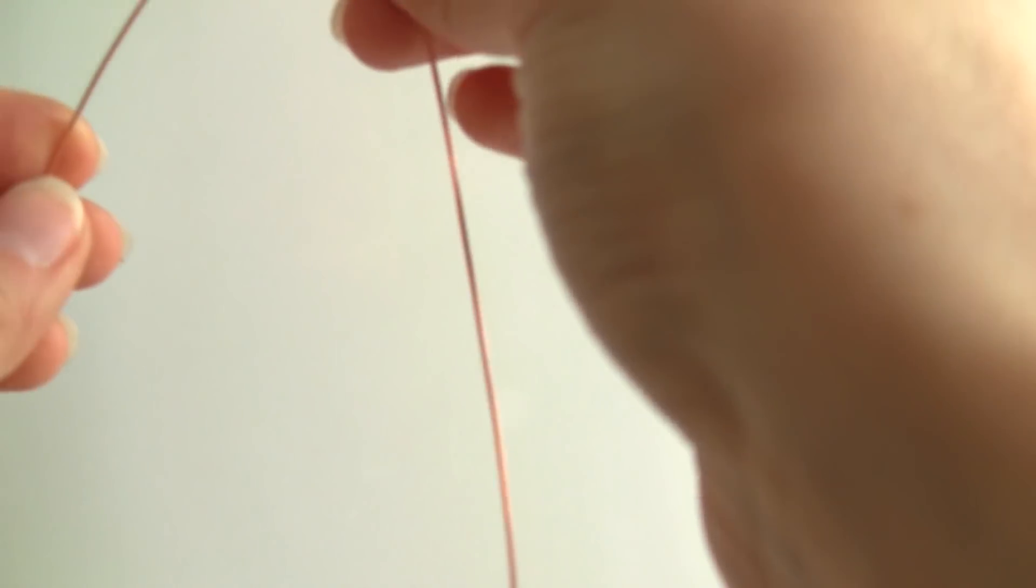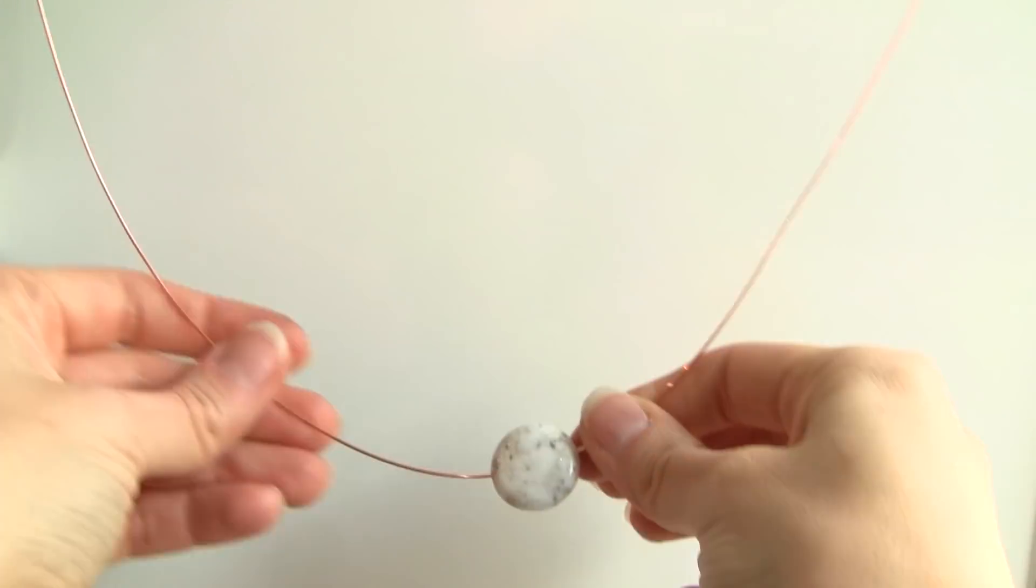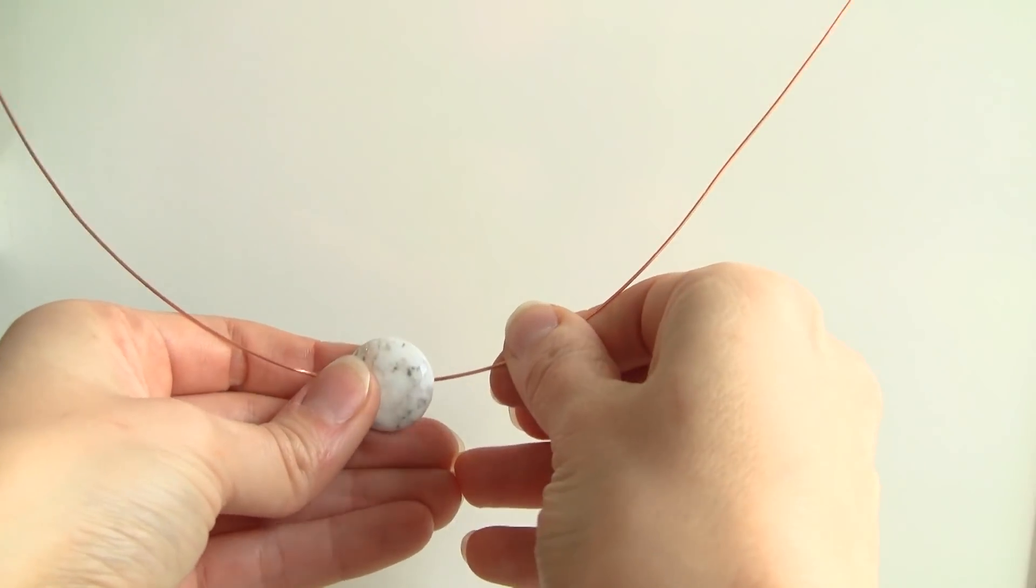So I put the bead on the wire, I'm kind of folding the wire in half and I'm moving the bead down. I know it's kind of hard to see, I'll try to zoom out, to the middle.